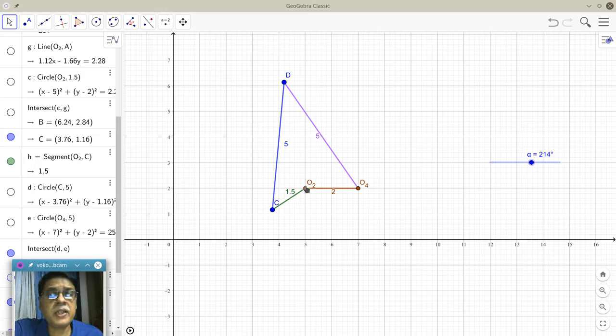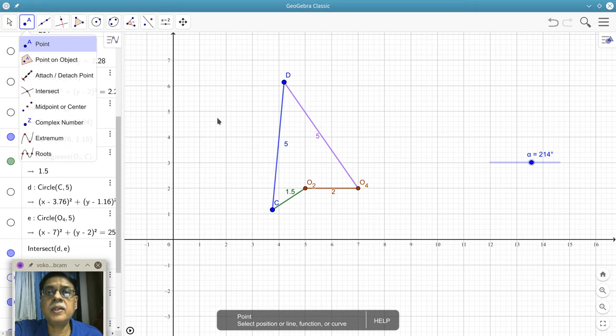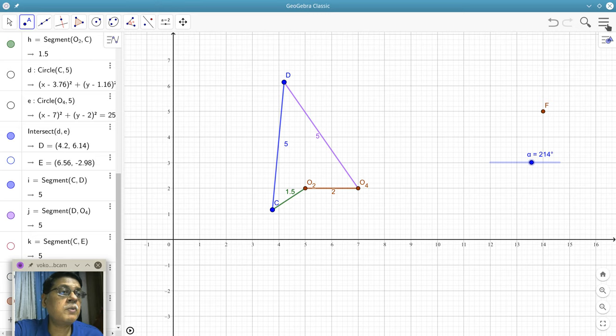So how are we going to construct? We know that the velocity of point C is going to be perpendicular to O2C and in this direction because omega 2 is anticlockwise. So, the first thing that we do is we will set the origin of the velocity diagram at an arbitrary location. So let me just choose that, I'm going to just put that somewhere and then we can move that around.